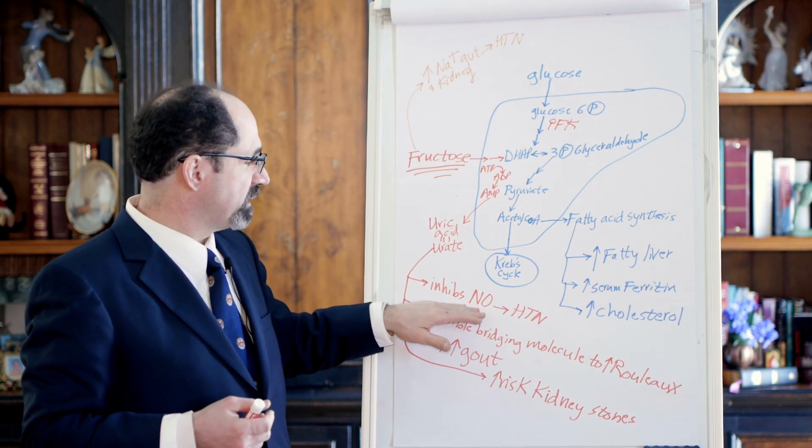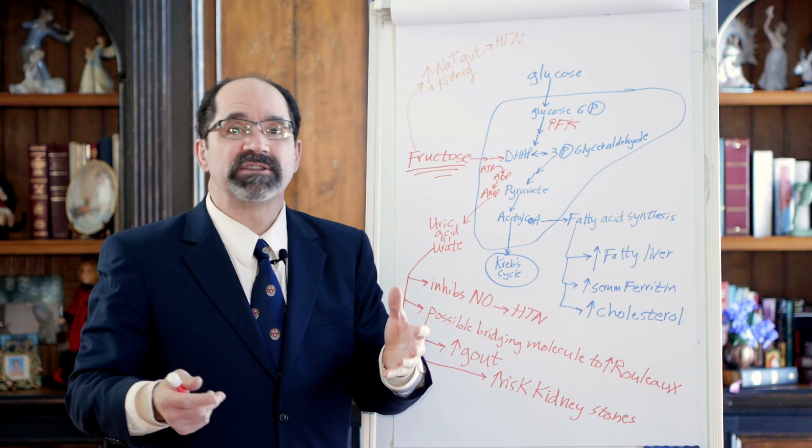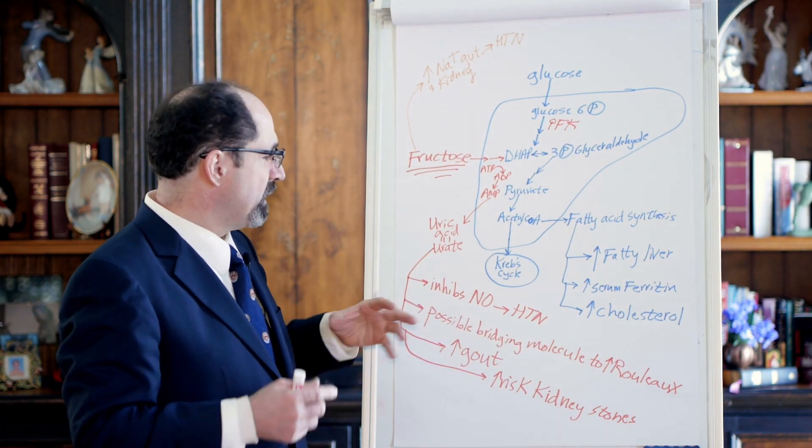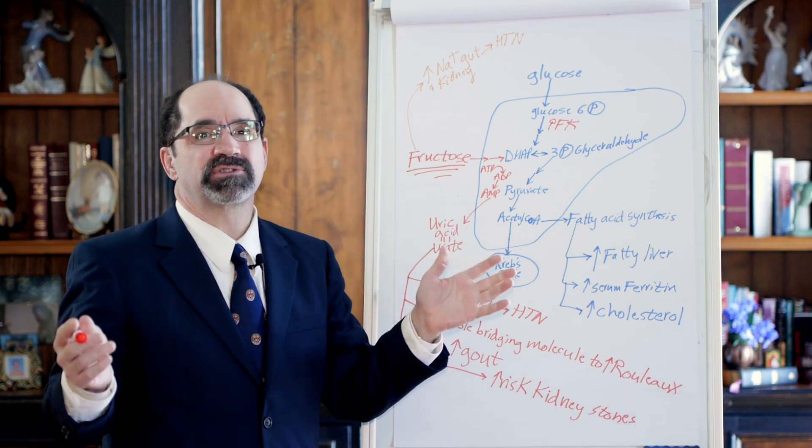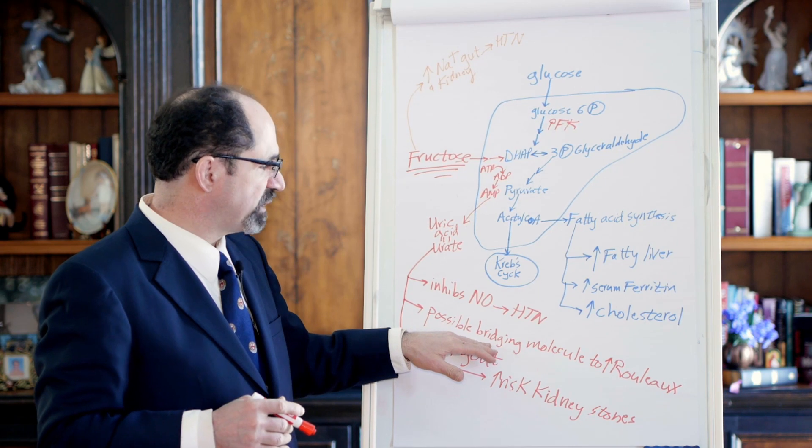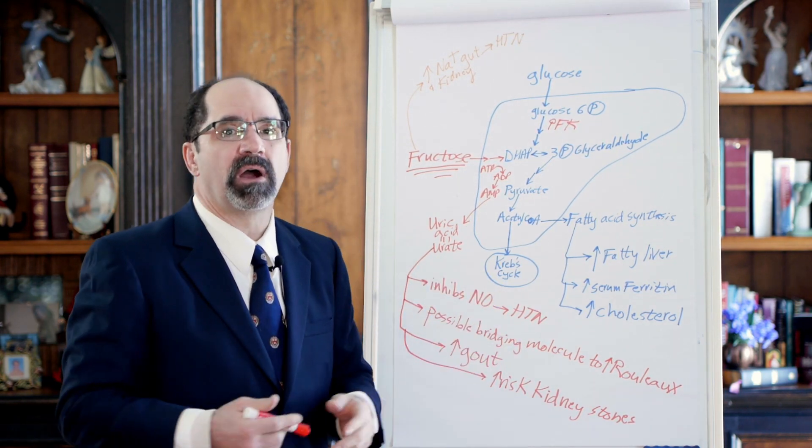Uric acid can be written as urate. It's a deprotonated form of it. And the point is that you very rapidly will drop your ATP amount in your liver cells and you'll make a lot of urate. The urate gets into the blood. It'll inhibit endothelial nitric oxide. You'll decrease nitric oxide, and then that leaves the vasoconstriction, which is associated with hypertension.